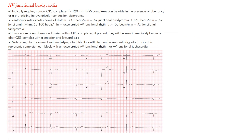AV junctional bradycardia is typically a regular narrow QRS complex — less than 120 milliseconds, which is narrow. The QRS complexes can be wide if there's already underlying aberrancy or a pre-existing intraventricular conduction disturbance. Now what separates these junctional rhythms...